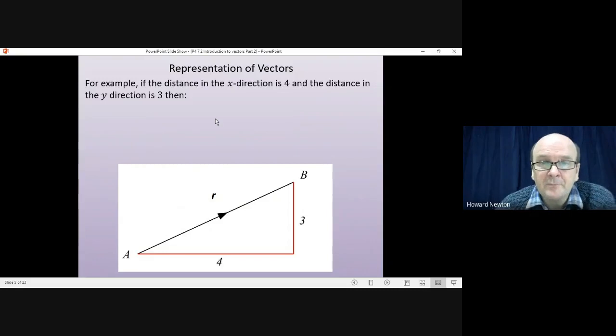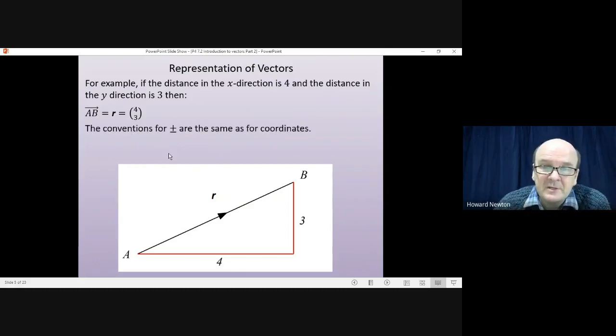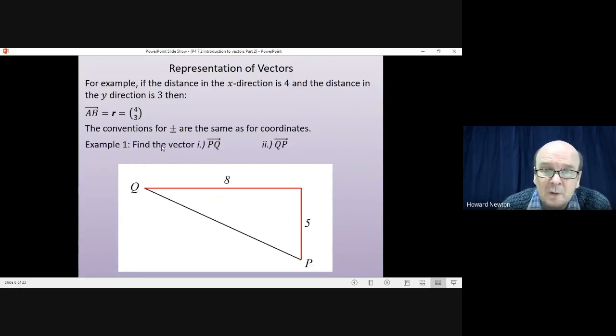So for example, if the distance in the x direction was 4 and the distance in the y direction was 3, then the vector AB we would write as the column vector 4 on the top, 3 on the bottom. And the conventions for plus and minus with these numbers, they're exactly the same convention as we use for coordinates. So x and y, that's the order that you write the numbers in when you write coordinates, it's the same for vectors, and plus and minus mean the same thing as well.